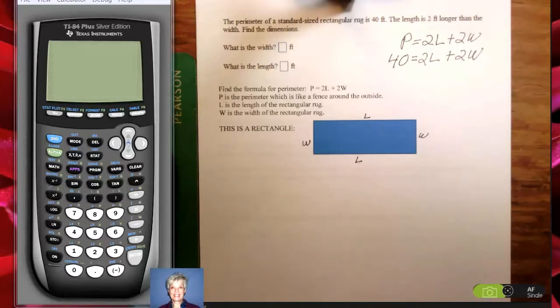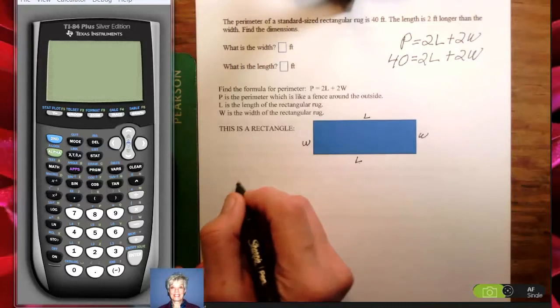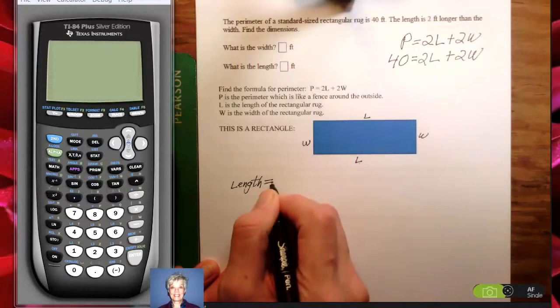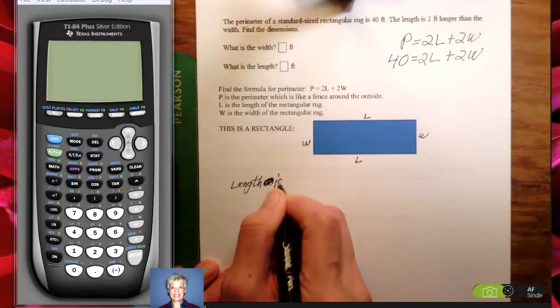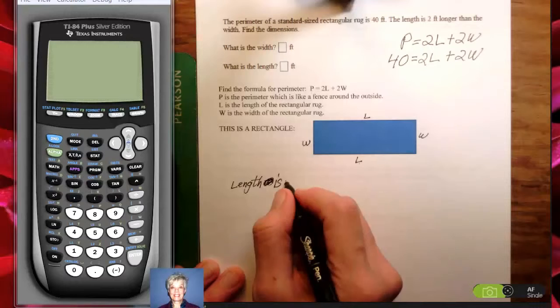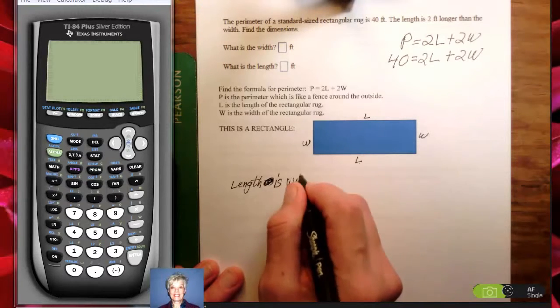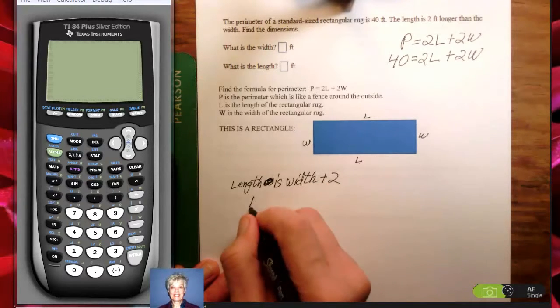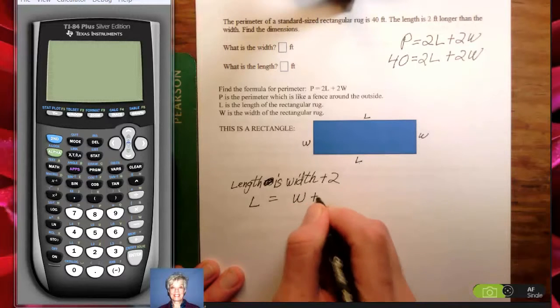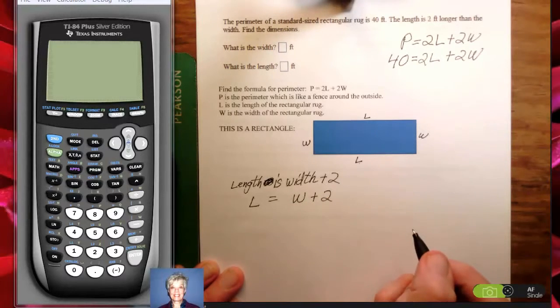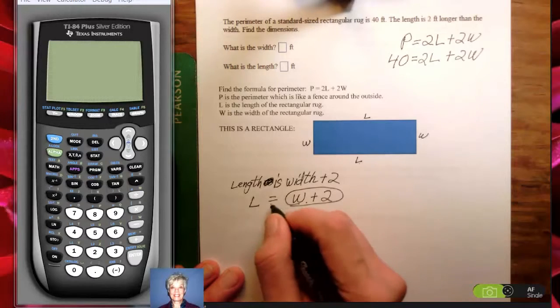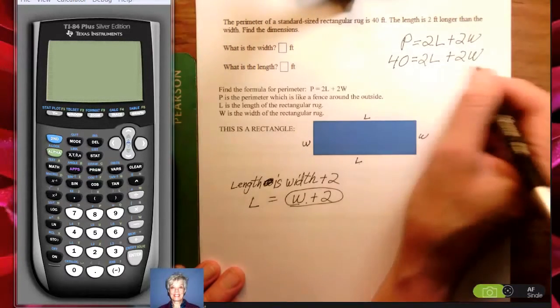Notice that we're given a way to convert. We're told that the length is 2 feet longer than the width. So it's the width plus an additional 2 feet. All right, so L equals W plus 2. All I have to do is substitute W plus 2 for L because W plus 2 equals L. So I'm going to rewrite this formula.